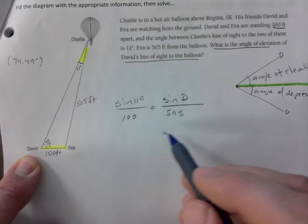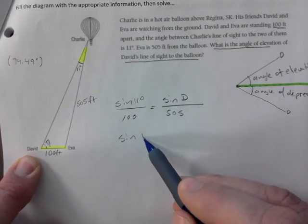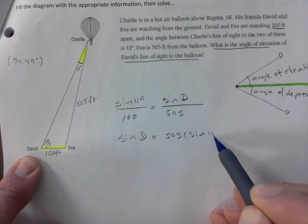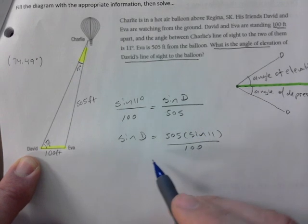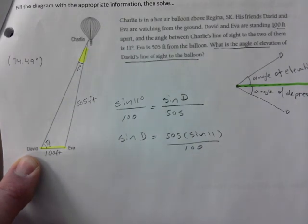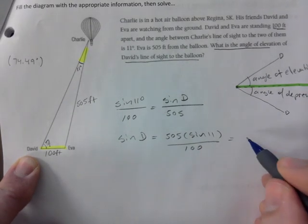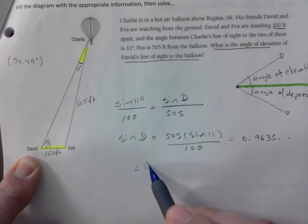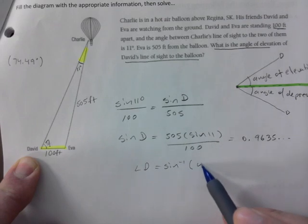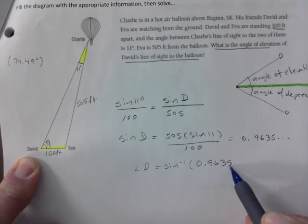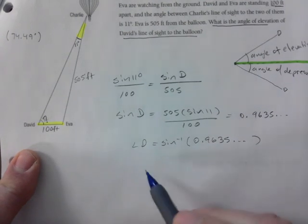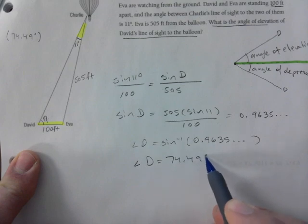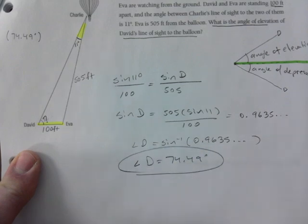So sine of 11 over 100 is sine of angle D over 505 feet. So sine of D is 505 times sine of 11 divided by 100. I'll just get my key here, and that is 0.9635. To find angle D we just have to take the inverse of sine, and here it is, angle D is 74.49. Always round to two decimals, always include your units.